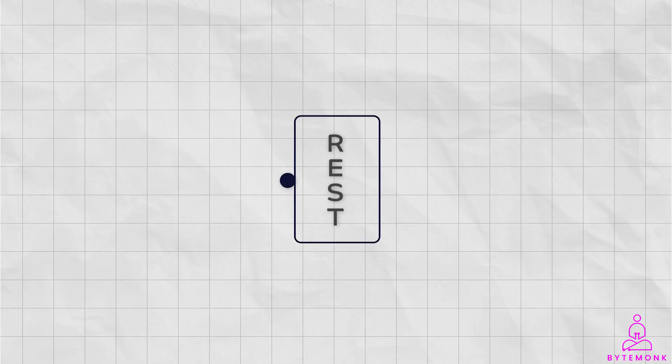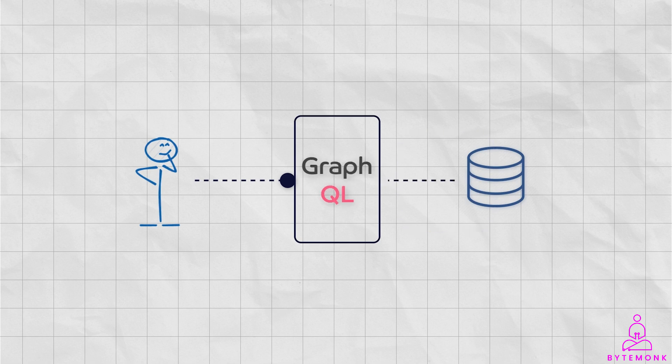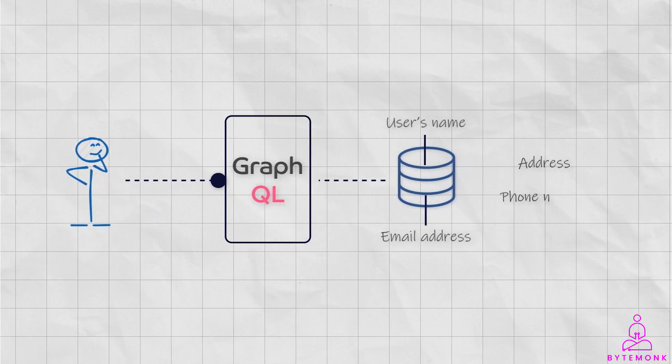A REST API might have an endpoint that returns all of the data for a user, even if the client app or developer only needs a few pieces of data. This can be inefficient, especially if the user has a lot of data. With GraphQL, you can request only the specific data you need — for example, the developer could query the API for the user's name and email address, but not their address or phone number.